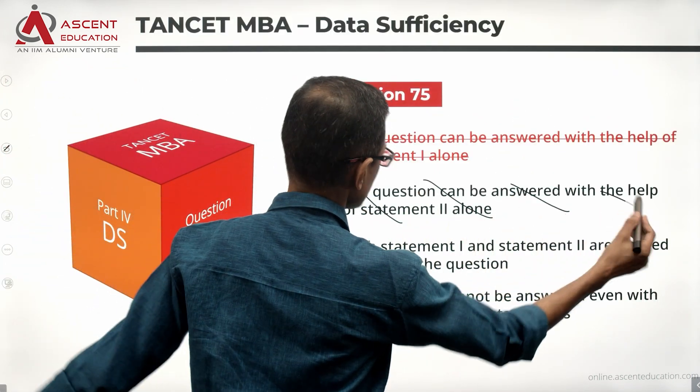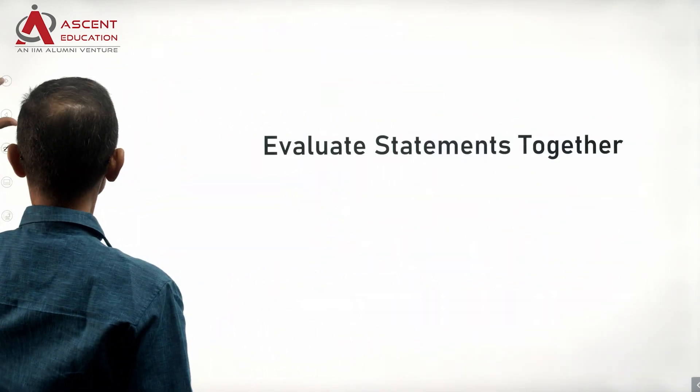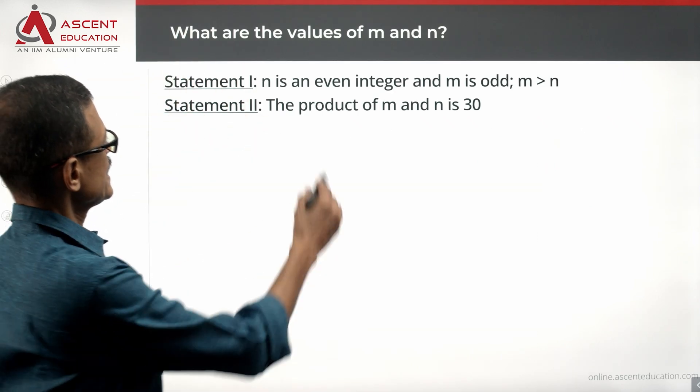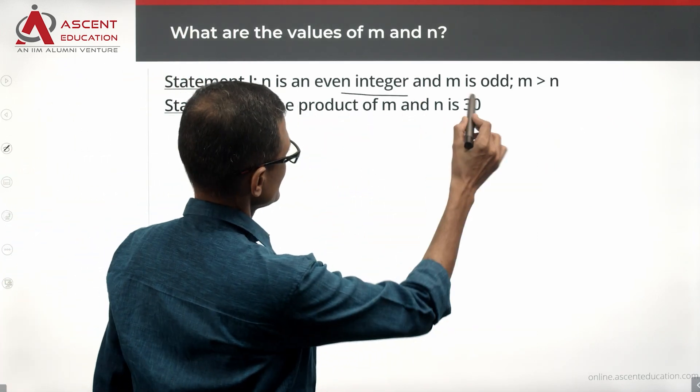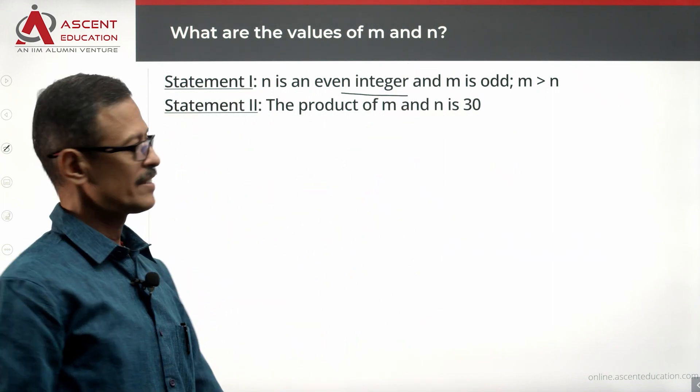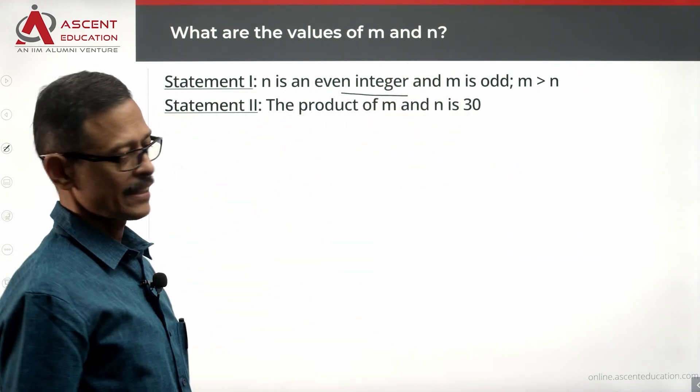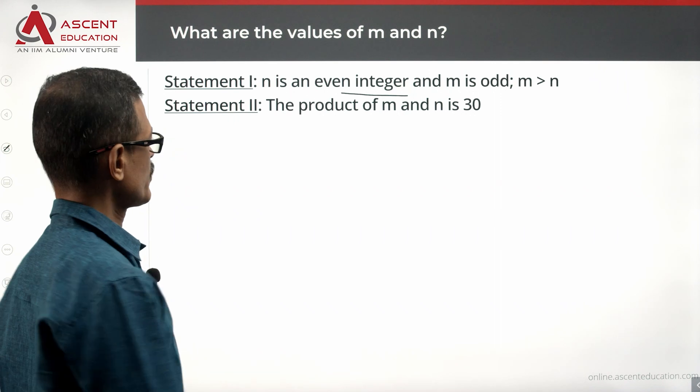Eliminate answer option B. Combine the statements. I think there could be a possibility. N is even, M is odd, M is greater than N. The product is 30. Let us see if you get a unique value from it.